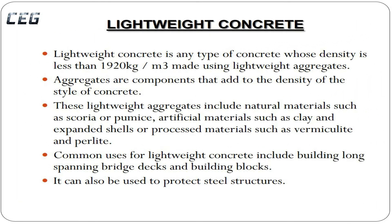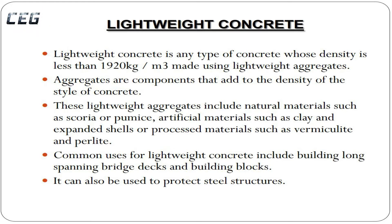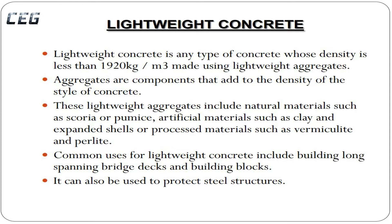Lightweight concrete is any type of concrete whose density is less than 1920 kg per cubic meter. It is made using lightweight aggregates, which are components that affect the density of the concrete. These lightweight aggregates include natural materials such as scoria or pumice, artificial materials such as expanded clay and expanded shells, or processed materials such as vermiculite and perlite.